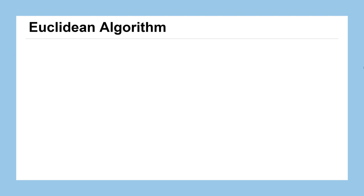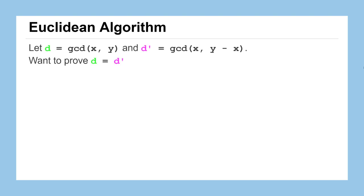Now let's see why the Euclidean algorithm must always work. Define d as the greatest common divisor of x and y, and d prime as the greatest common divisor of x and the difference y minus x. Our goal is to prove that those two values are actually the same. If that's true, then the algorithm we saw previously must always work — it wasn't just a fluke.